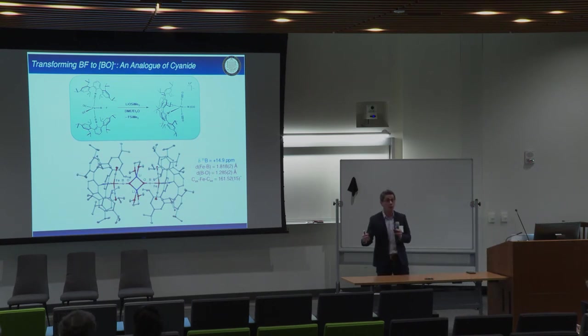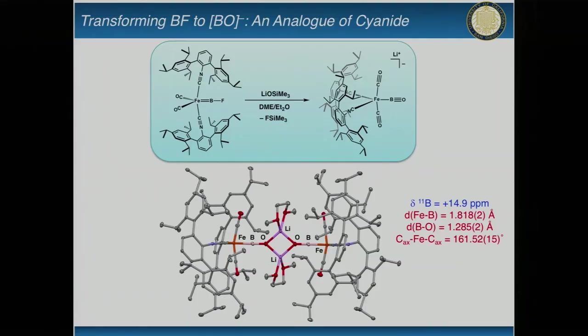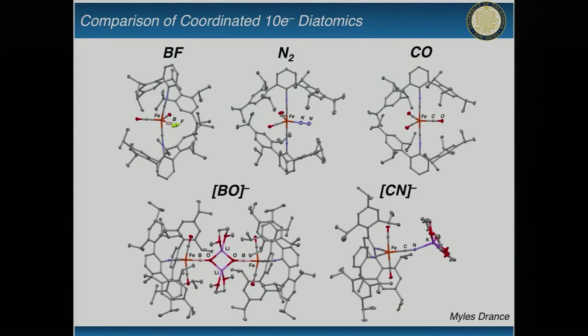We've been able to take this boron monofluoride compound and treat it with a particular reagent to now make a BO compound. What's important about this is this is also another 10-electron diatomic isoelectronic to cyanide. All of a sudden, where we've been familiar for the past 200 years of chemistry with dinitrogen and carbon monoxide and the cyanide ion as 10-electron diatomics, in the past two years, we've been able to add two more of those - BF and BO- as entities that are possibly able to do some interesting chemistry.